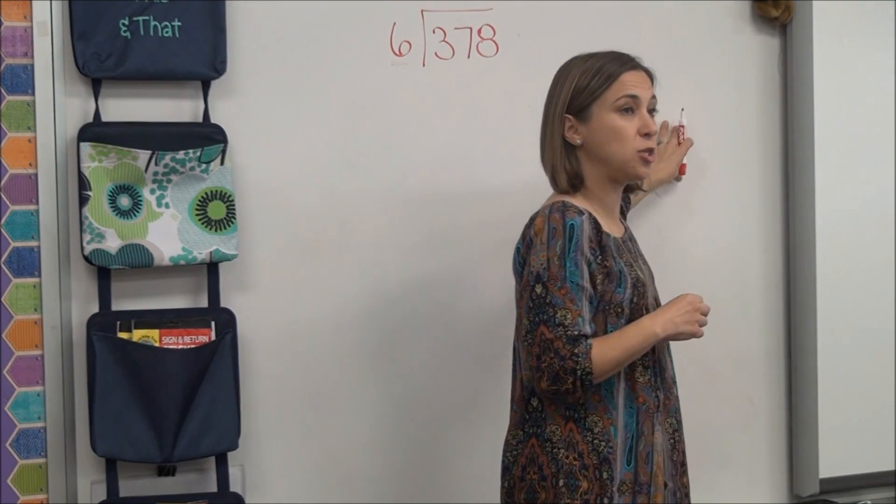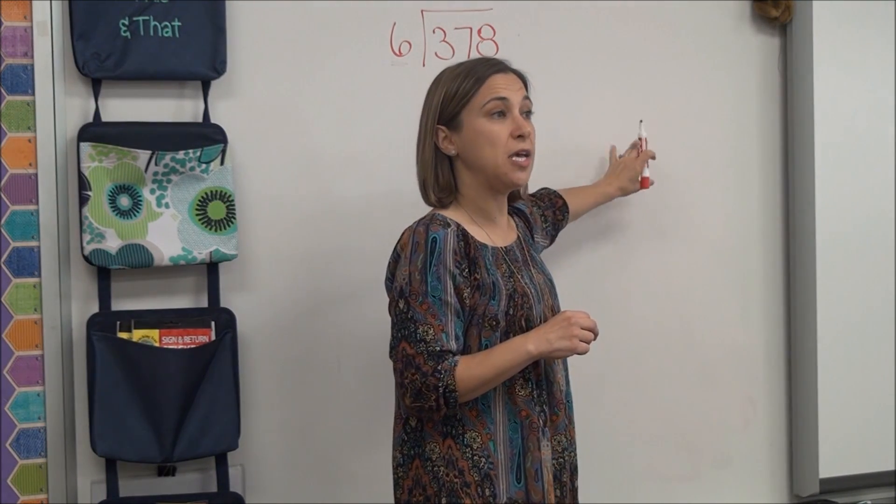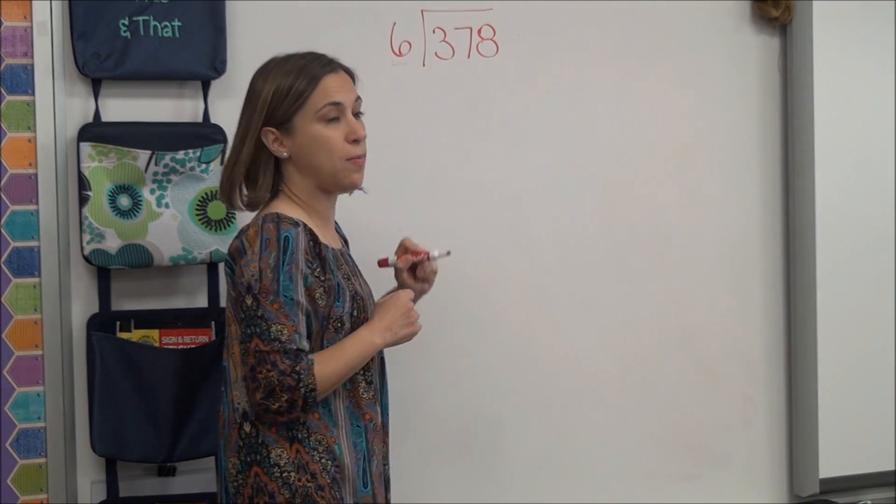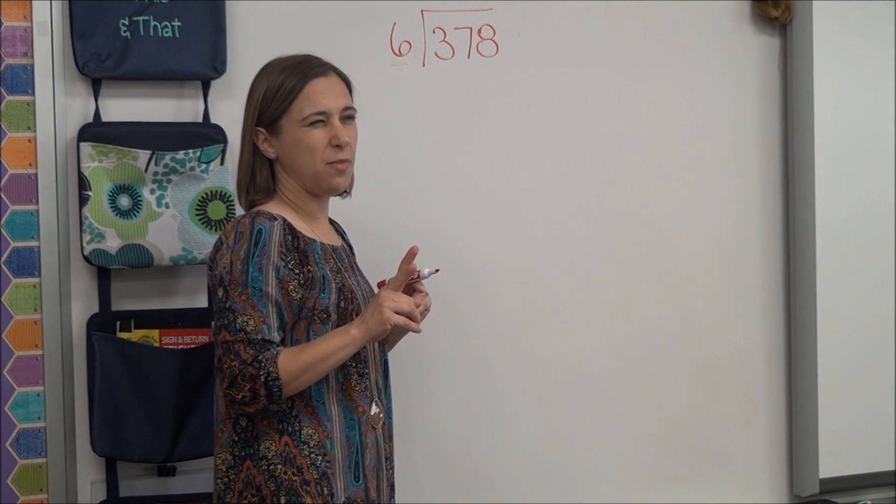The first thing we're going to do with the partial quotient method is we're going to do a brain dump. We're going to put on our board everything we know about this number 6. Let me ask you this.